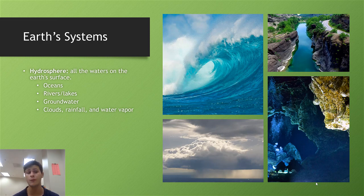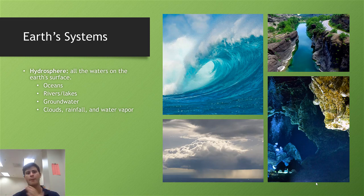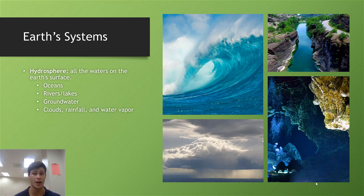The hydrosphere can include things like clouds, rainfall, or water vapor. So you can already begin to see that there is a layer of overlap between the atmosphere as well as the hydrosphere.